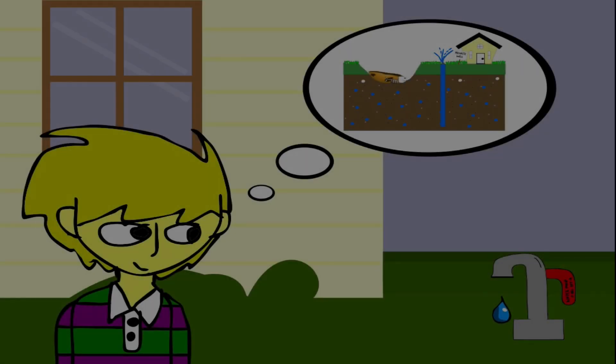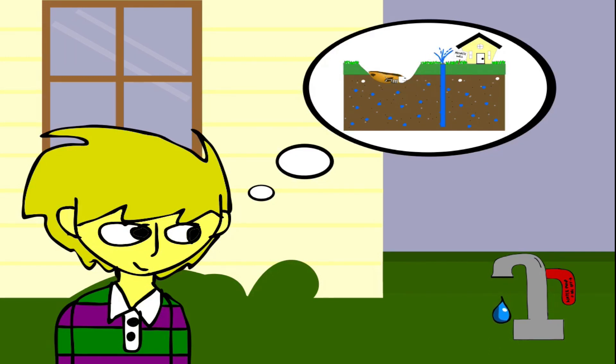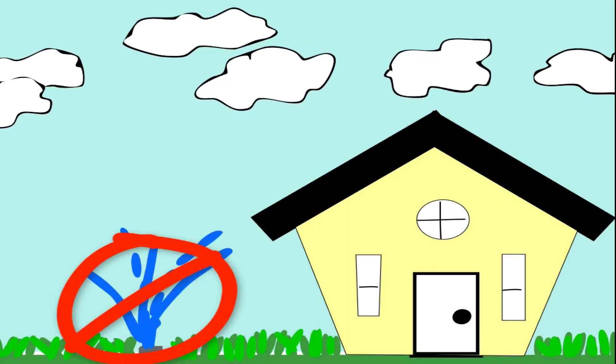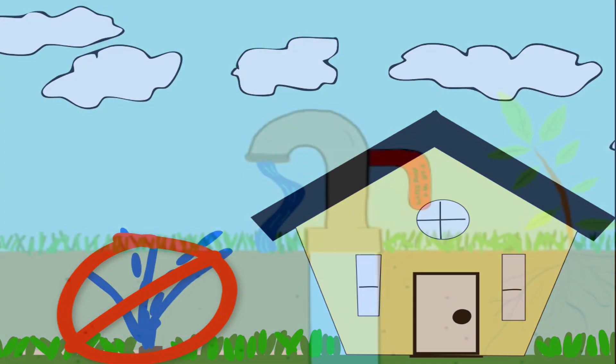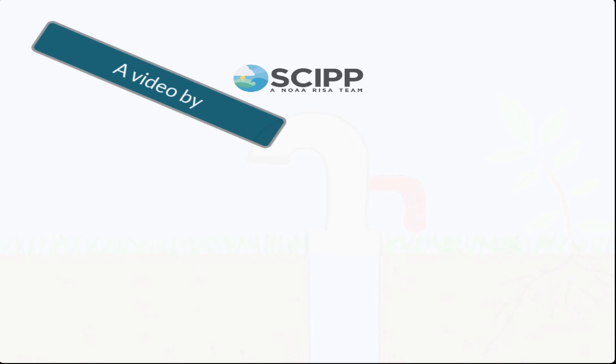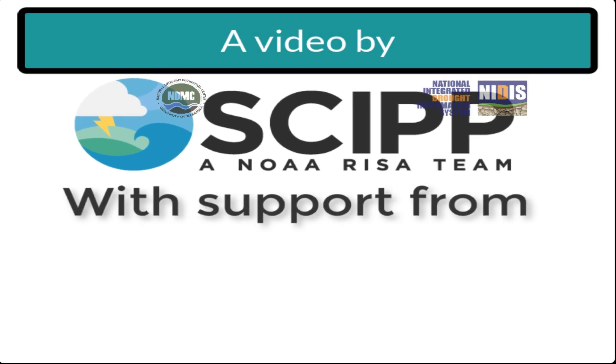So, next time you turn on that well water sprinkler, think about how it affects your neighbors and your community. If they are under water restrictions for surface water, it would be a good idea to practice conservation for underground supplies too.